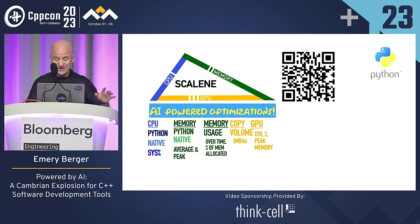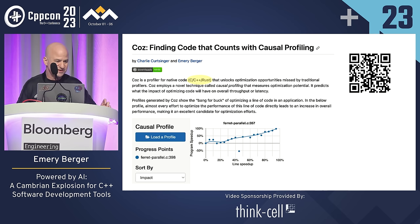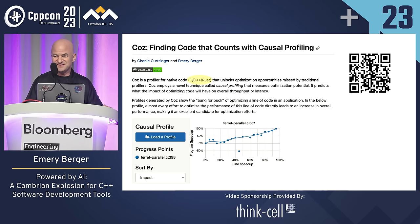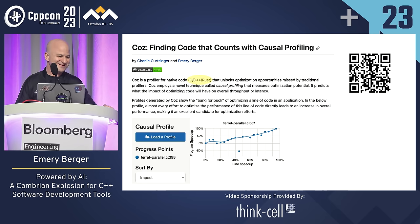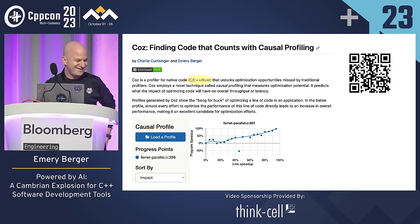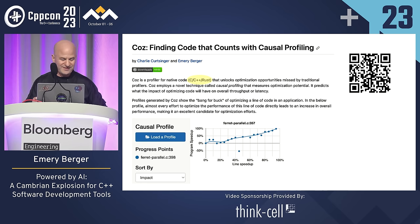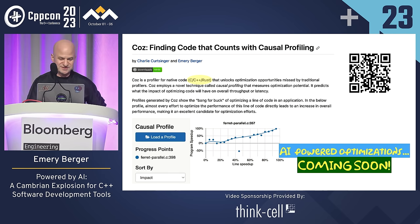Scalene now has AI-powered optimizations. Of course, it's for Python, not for C++. We are planning to bring this to our other profiler called Cause that some of you may know about. I found to my surprise and delight that it's become very popular in the Rust world — it's been downloaded over 400,000 times. We plan to bring the same AI-powered optimizations to Cause that we have for Scalene.